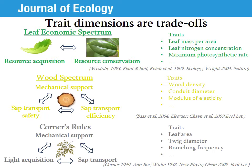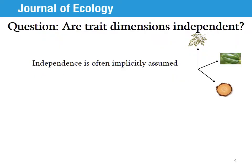The third dimension, called Corner's Rule, is an architectural dimension. It arises because the plant optimizes light acquisition, sap transport, and mechanical support within the limits established by biophysical and metabolic constraints. Some of the traits associated with this dimension are leaf area, twig diameter, and branching frequency. The concept of trait dimensions is central to our understanding of biodiversity, and it is broadly used in ecology and evolution.